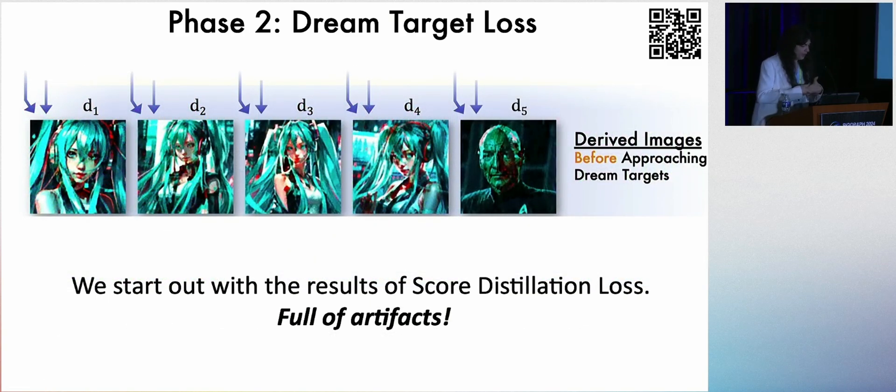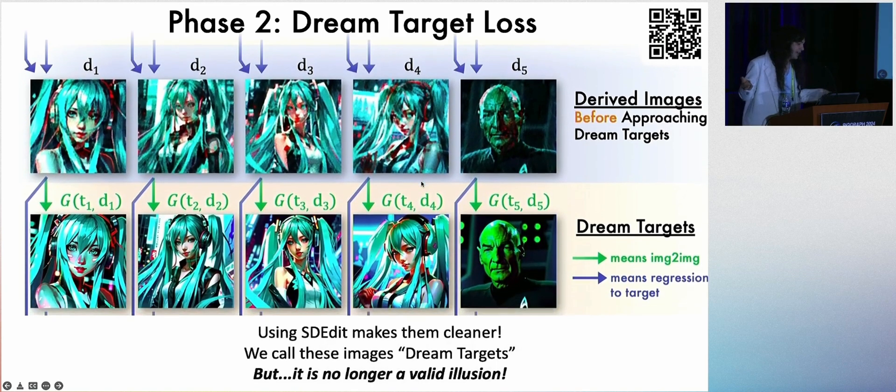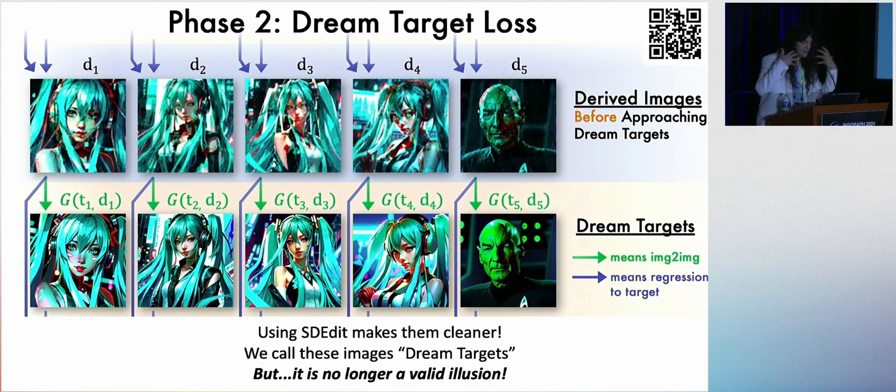So here's an example of a hidden overlay illusion where these first four Mikus are overlaid to create a Picard. And they're good, they look nice, but they have noisy artifacts on them. If you were just to take SDEdit and bring them more towards that prompts by adding some noise and then denoising it using a diffusion model, we can get cleaner images for each one.